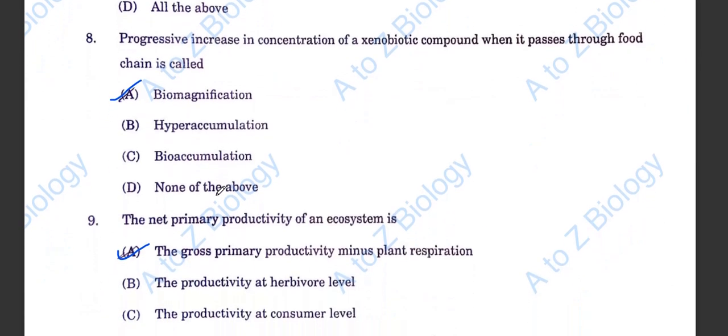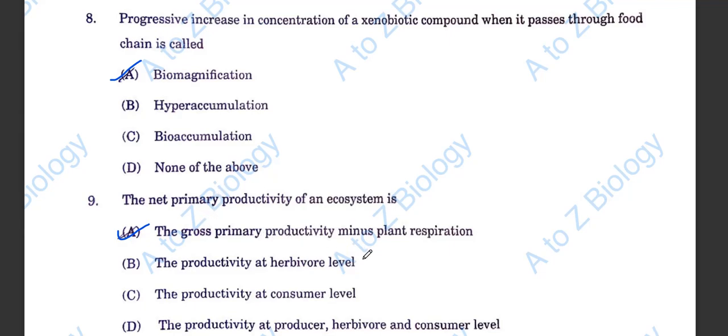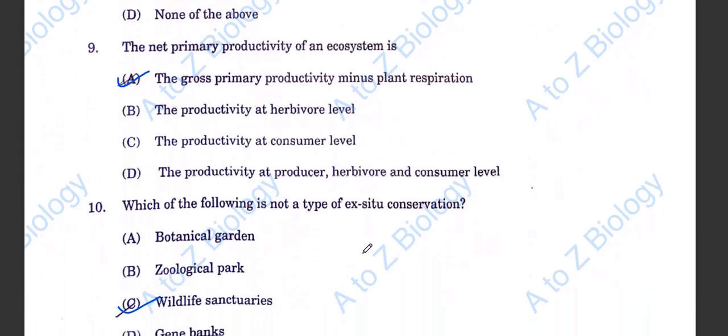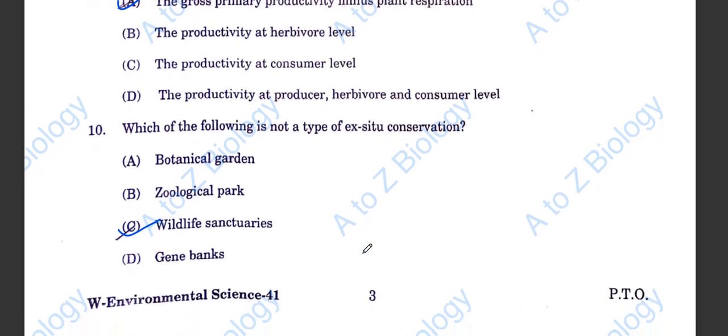Question number 9. The net primary productivity of an ecosystem is the gross primary productivity minus plant respiration. Which of the following is not a type of ex-situ conservation? Wildlife sanctuary is not a type of ex-situ conservation.